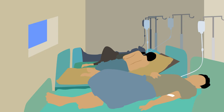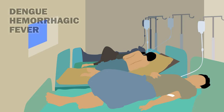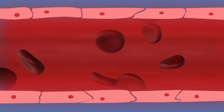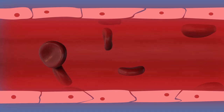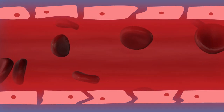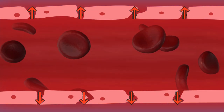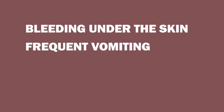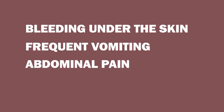Sometimes a severe form of the disease occurs, such as dengue hemorrhagic fever, in which the blood vessels become permeable, leaking plasma and resulting in symptoms such as bleeding under the skin, frequent vomiting, and abdominal pain.